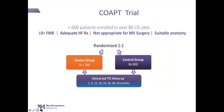When it was understood that MitraClip worked for degenerative MR, the question was: what happens with patients who have weak heart muscles, are not doing well with medical therapy, and have a leaking mitral valve? In the COAPT study, recently completed and published, over 600 patients were enrolled in 80 centers. These were patients with severe — greater than three-plus — functional mitral regurgitation, all on guideline-directed medical heart failure therapy, deemed not appropriate for mitral valve surgery due to comorbidities, advanced age, or severe left ventricular dysfunction.